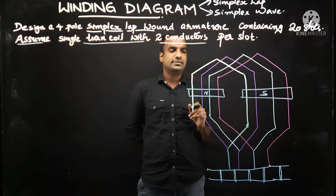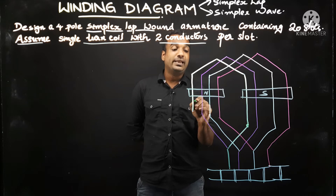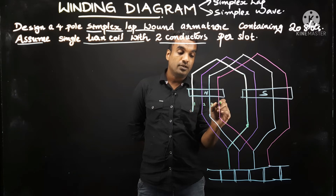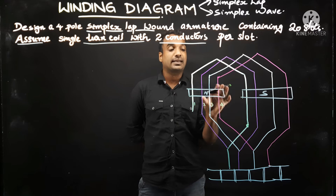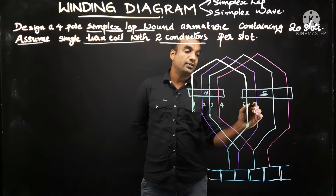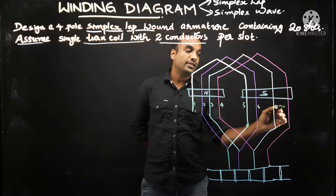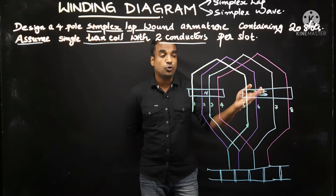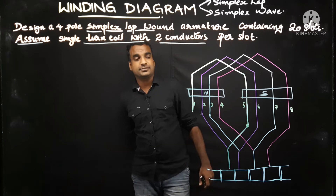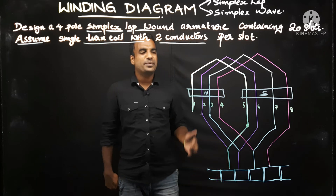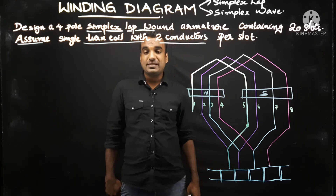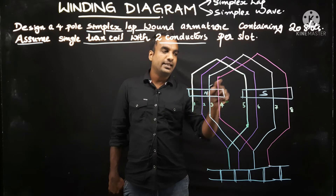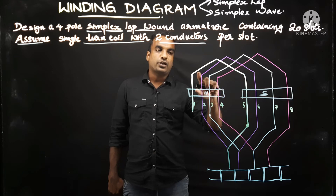In this lap winding case, we can see how many conductors are under each pole: 1, 2, 3, 4 — four conductors under each pole. Then 5, 6, 7, 8 — next four conductors under the first south pole. So there are 8 conductors total. How many coils are there? Four coils, because one starting end and one finishing end contribute one coil.